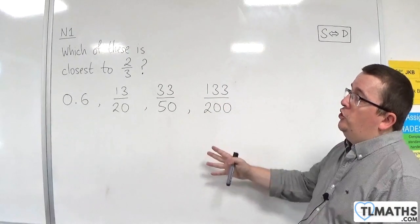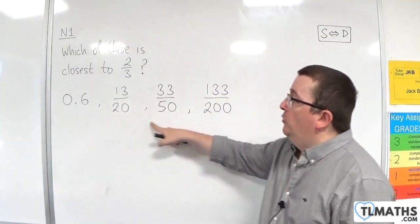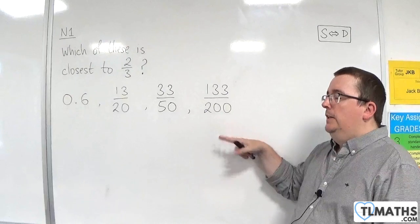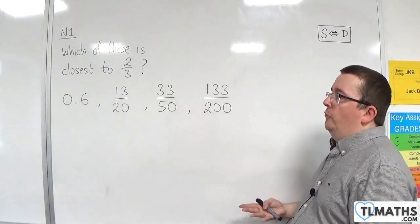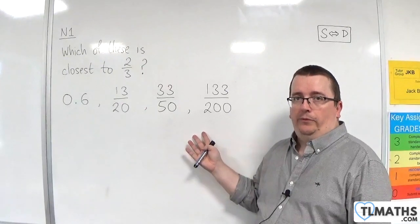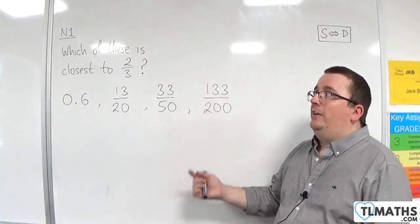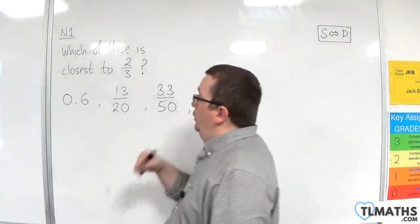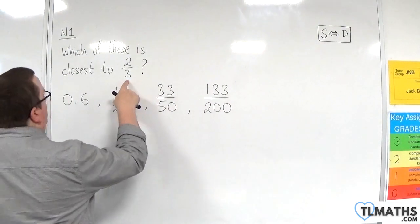In this video, I want to answer the question, which of these four numbers is closest to two-thirds? Now, in order to answer that question, really, it would be a whole lot easier if they were all given as decimals. And so what I want to do is I want to convert each of the fractions into decimals, including the target that I've got here, the two-thirds.